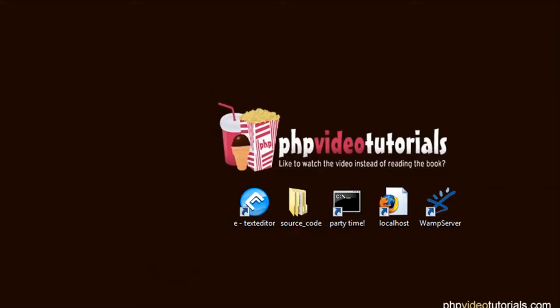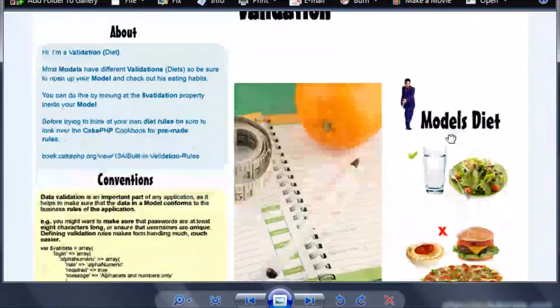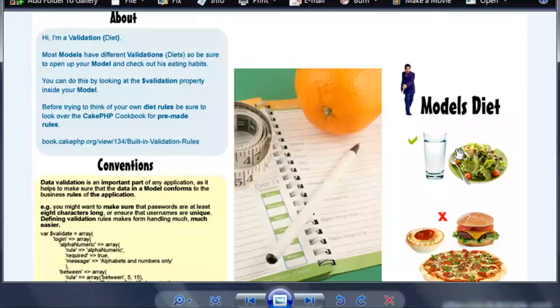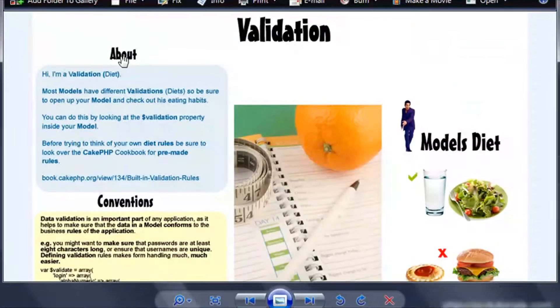Alright. Let's look at validation. Just open up your validation study guide. And you can see here that I see validations as a model's diet. Models like to eat healthy food. And they don't like to eat any of this junk here. Although I would like to eat that hamburger right now. Hi. I'm a validation diet. Most models have different validations. So be sure to open up your model and check out his eating habits. You can do this by looking at the validation property inside your model. Before trying to think of your own diet rules, be sure to look over the CakePHP cookbook for pre-made rules.